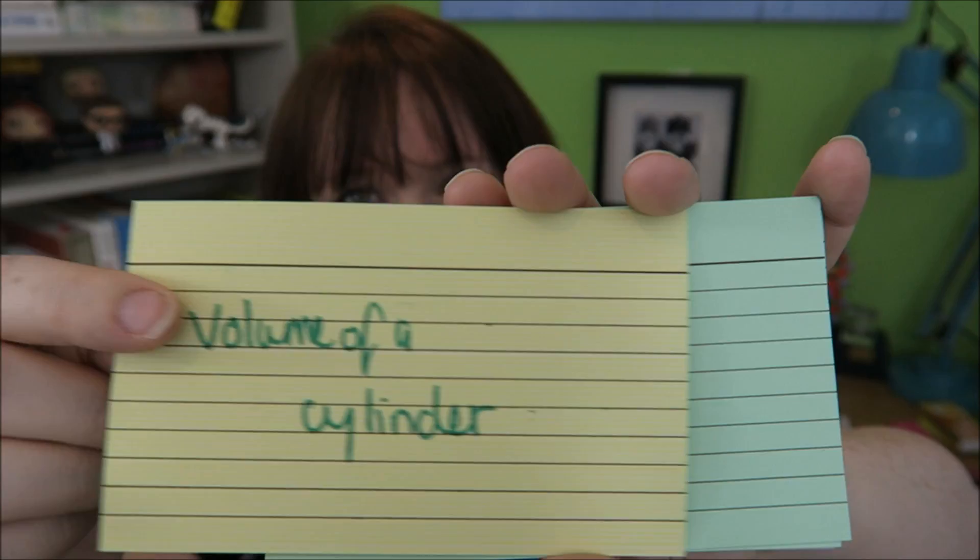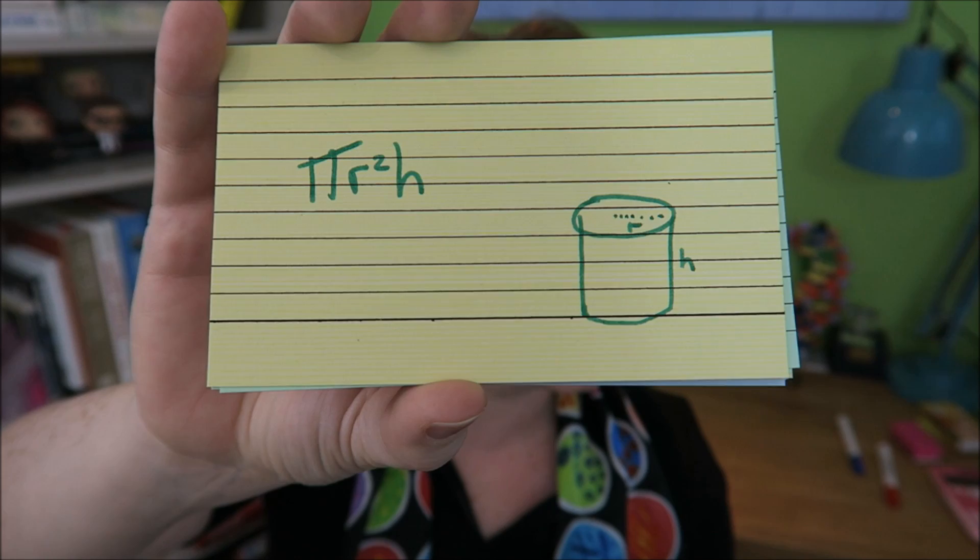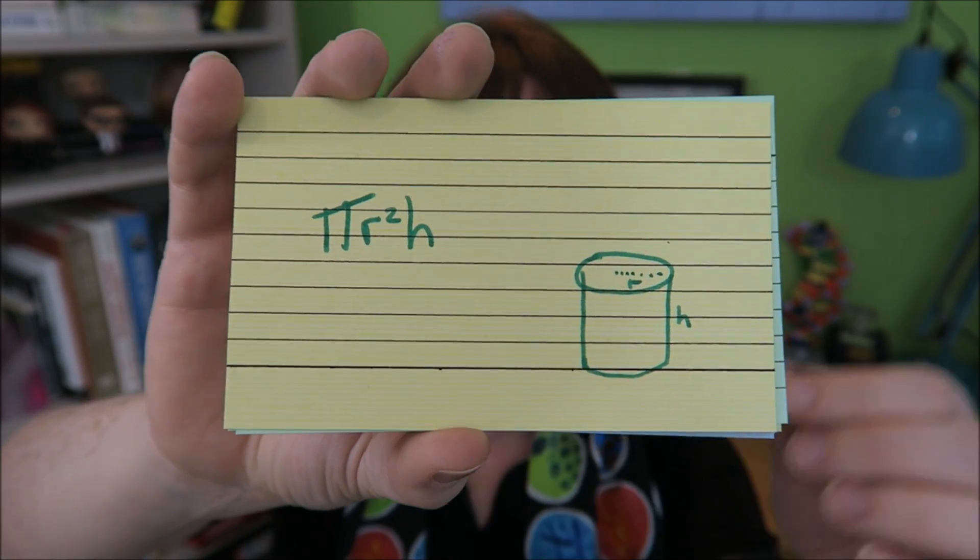Volume of a cylinder. That is pi R squared height, where R is a radius which is the middle to the edge.